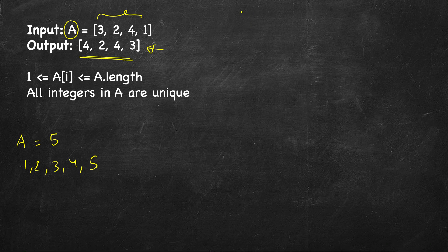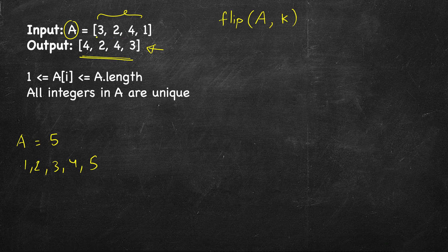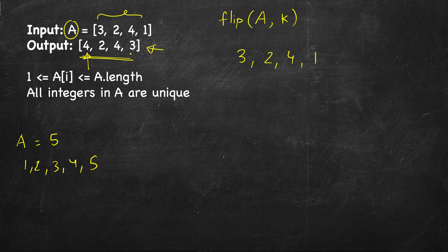In this problem, we are allowed to do one operation only, called flip. Given the original array A, if we flip at k, it means flip all elements from the beginning till the kth index — that is, reverse them. For example, with array 3 2 4 1, the first flip is 4, meaning flip till the fourth element. This output is based on one-based indexing, but in code we think of it as index 3 since indexing starts from 0.